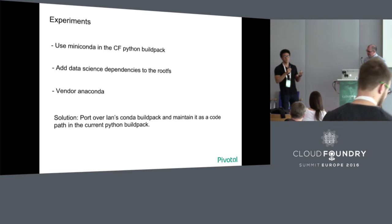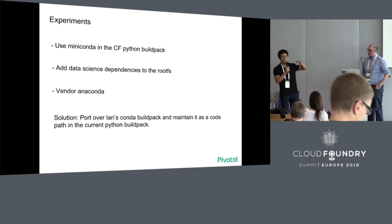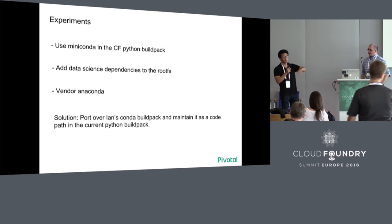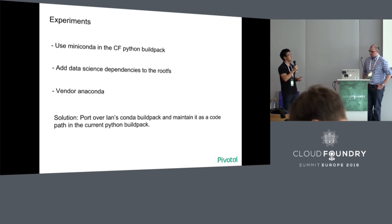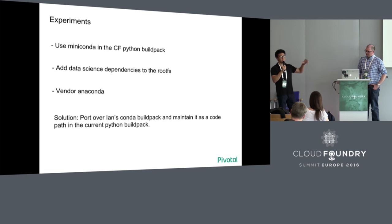Conda is the actual package manager — the equivalent in Ruby would be Bundler or RubyGems, or in Java, Maven. Miniconda is the package manager itself and all the things you need to actually run it — so for the Bundler example, it would be Ruby and whatever gems Bundler depends on, all packaged together. And then Anaconda is Miniconda plus the package manager plus a whole large slew of data science packages that comes with it.